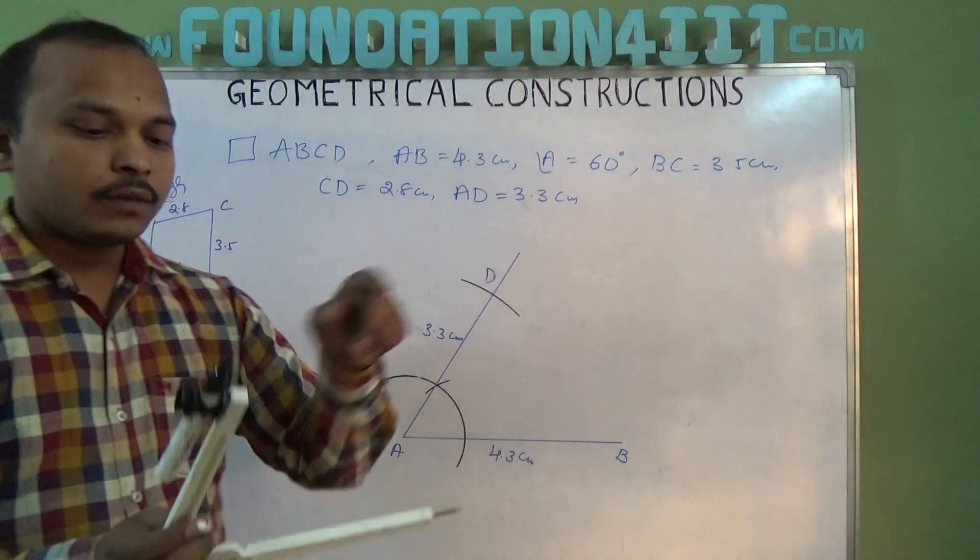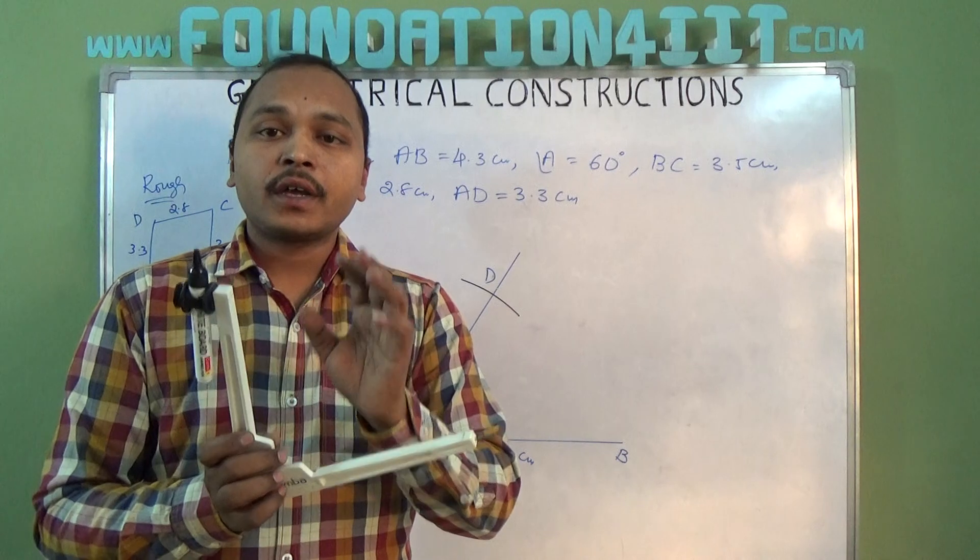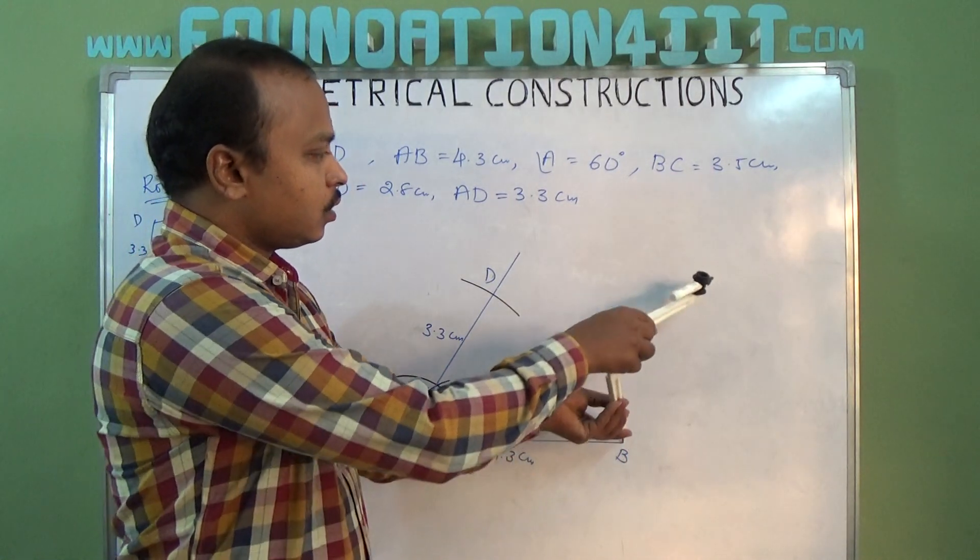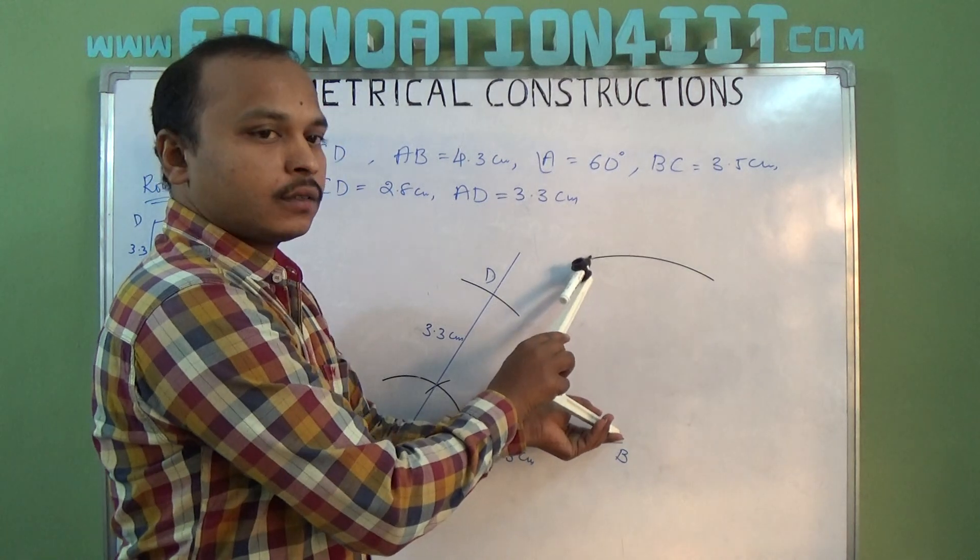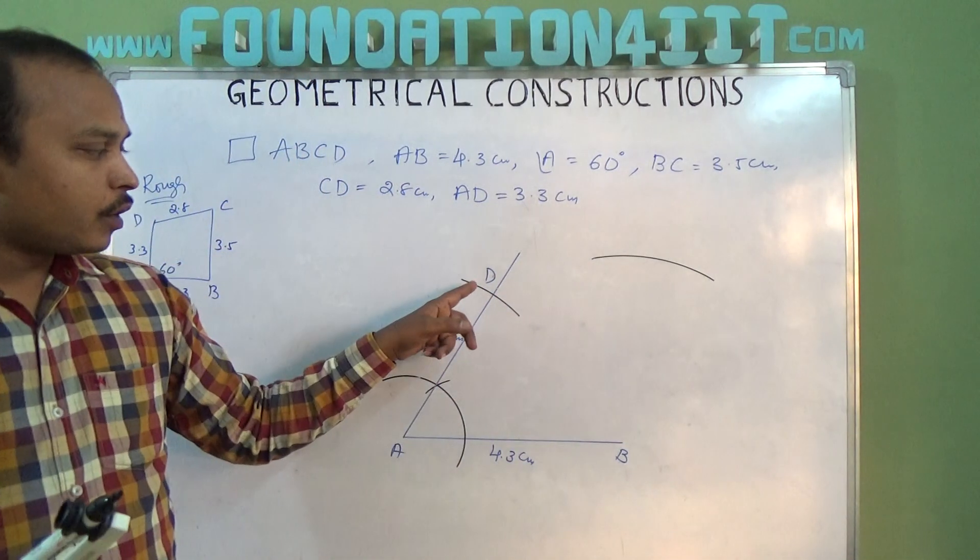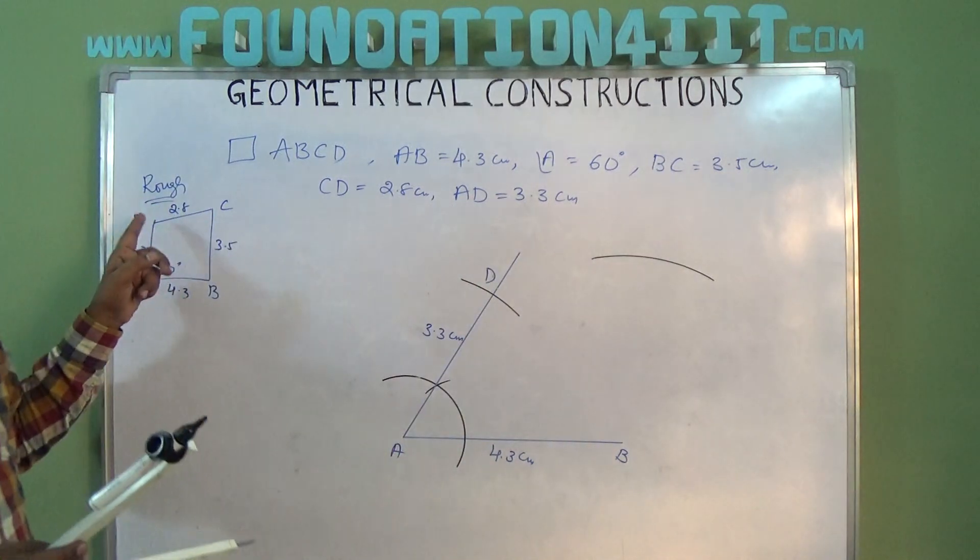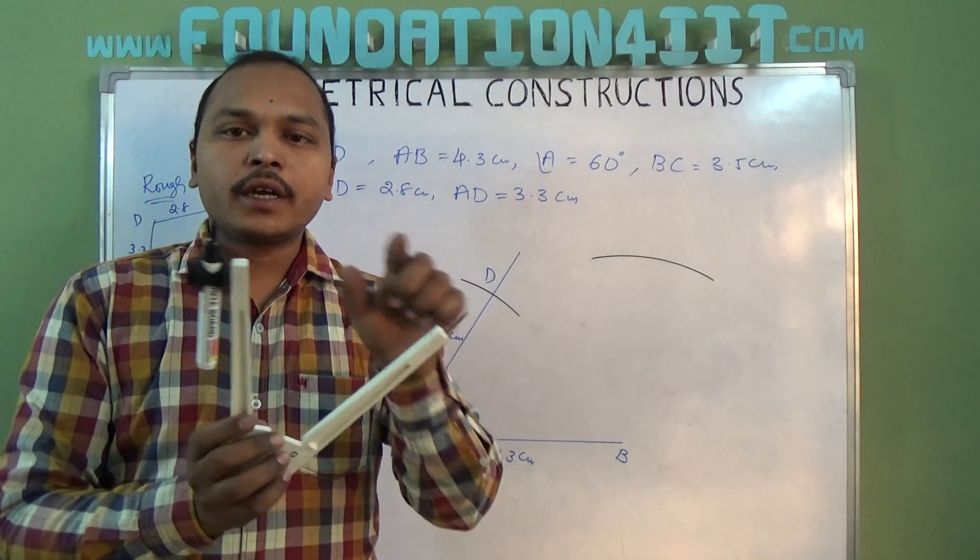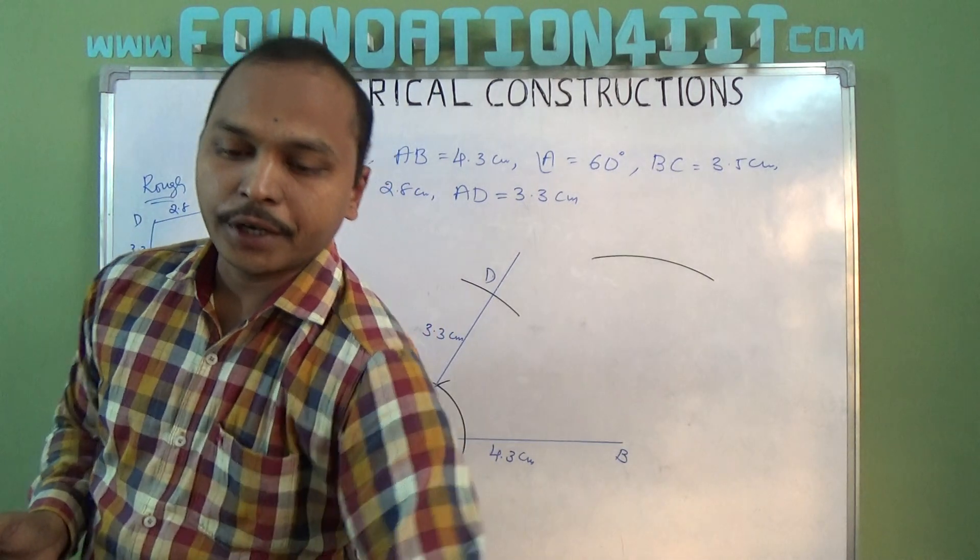B to C is 3.5 centimeters, so take 3.5 radius. From B, draw an arc. Next, D to C distance is 2.8. Again using the scale, take distance 2.8.